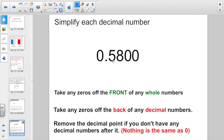Here we go. 0.5800. Take off any zeros off the front of any whole numbers. Well, I actually don't have a whole number here. I just have one zero in the ones place. And when we're writing decimal numbers, if we don't have a whole number, we do want to include this zero. Now we have take any zeros off the back of any decimal numbers. I don't need that zero at the end, and I don't need that zero at the end. That's just leaving us with 0.58.